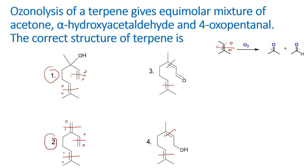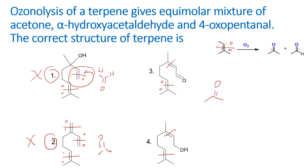In question number one and question number two, the molecule gives formaldehyde — a CH₂=O fragment — as one of the cleavage products. Since formaldehyde is not given as an option in the question, options one and two are ruled out. All four structures do give acetone from the bottom part of the molecule, so acetone cannot be used as a differentiator.